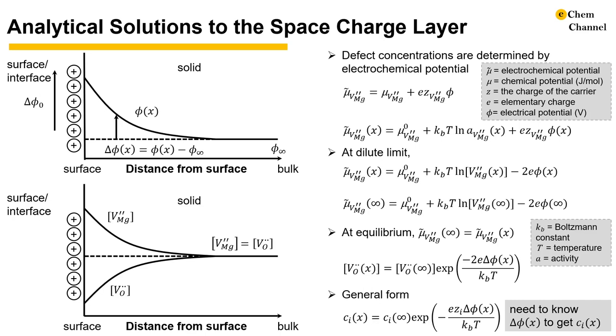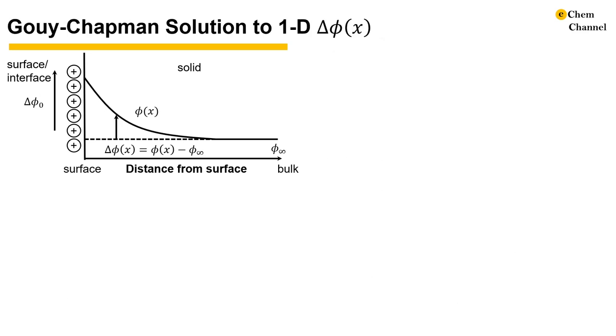To know the exact solution, we will need to know the answer of delta phi at position x. For the analytical solution to the delta phi x in 1D, we are going to use the Gouy-Chapman model for magnesium oxide. You probably have heard of this name if you have studied electrochemical double layer before. This is using the same solutions used for the double layer.